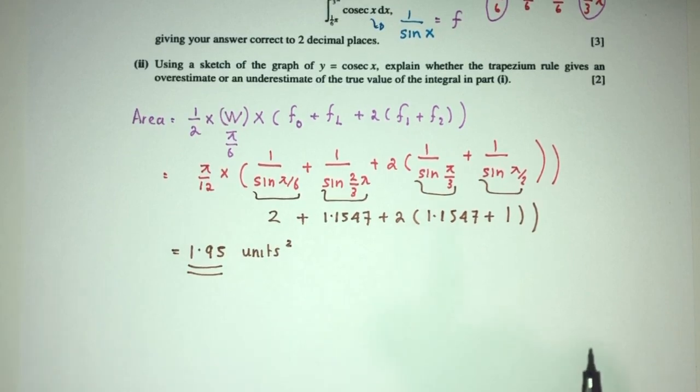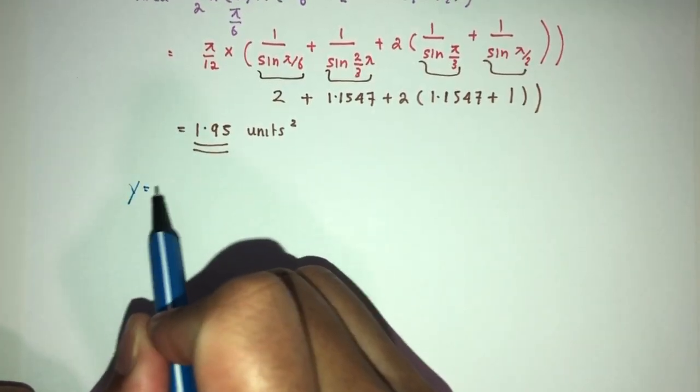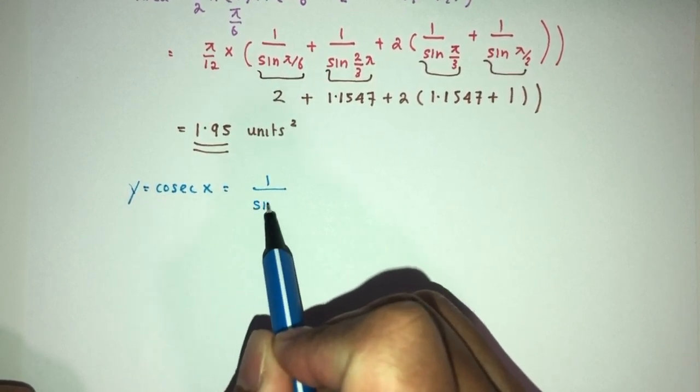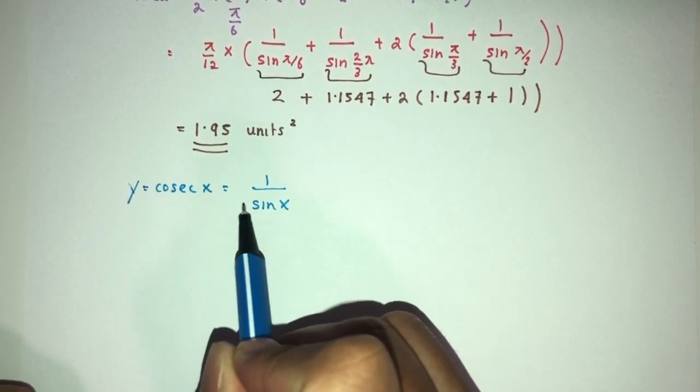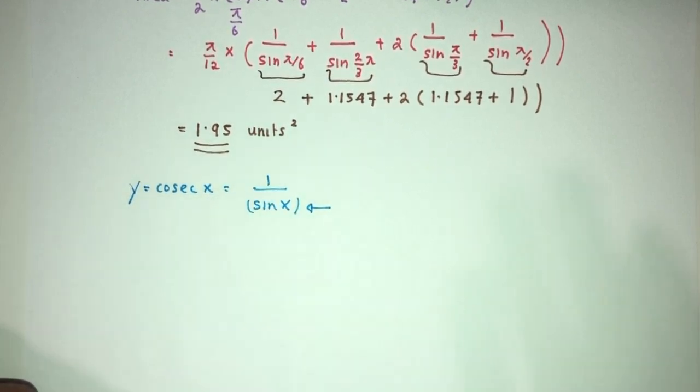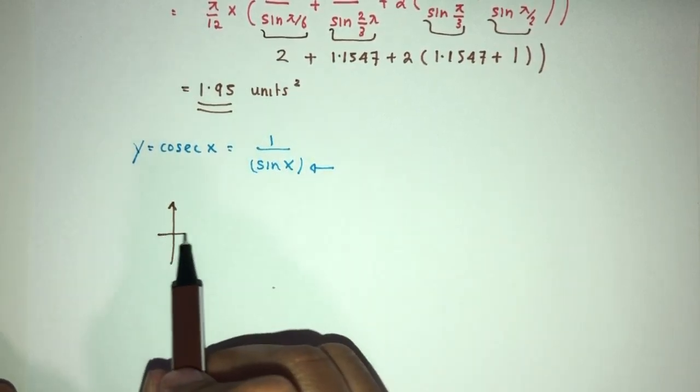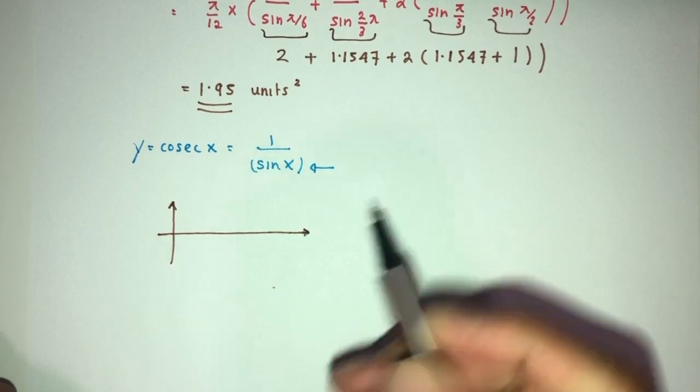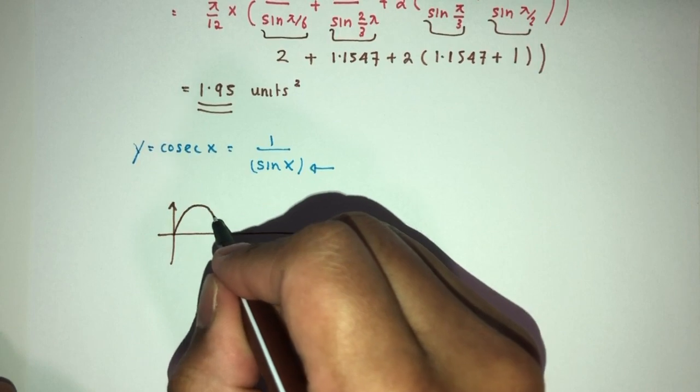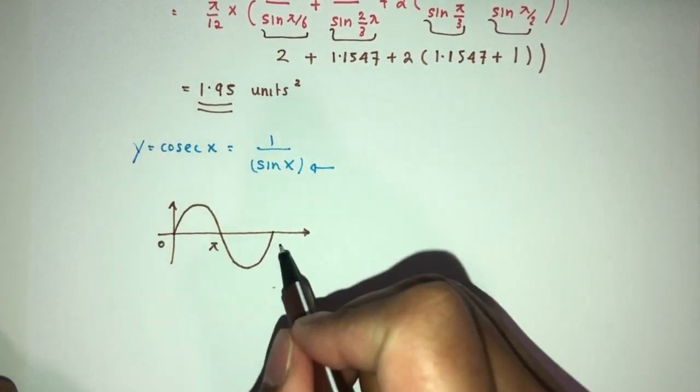Now part (b): using a sketch of the graph of y = cosec(x). What is y = cosec(x)? It is simply 1/sin(x). We can use the graph of sin(x) to help us draw this graph. Sine x looks something like this. Zero, one. Zero, π, and 2π.